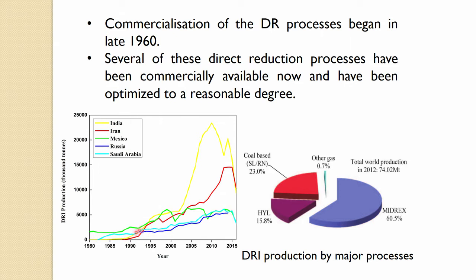For India and Iran, from around 1990 the production has been increasing quite significantly. It peaked around 2009. There was a reduction in 2015, though not very large, and a sharp drop appears because data were not available at that time. India is leading in DRI production, followed by Iran.